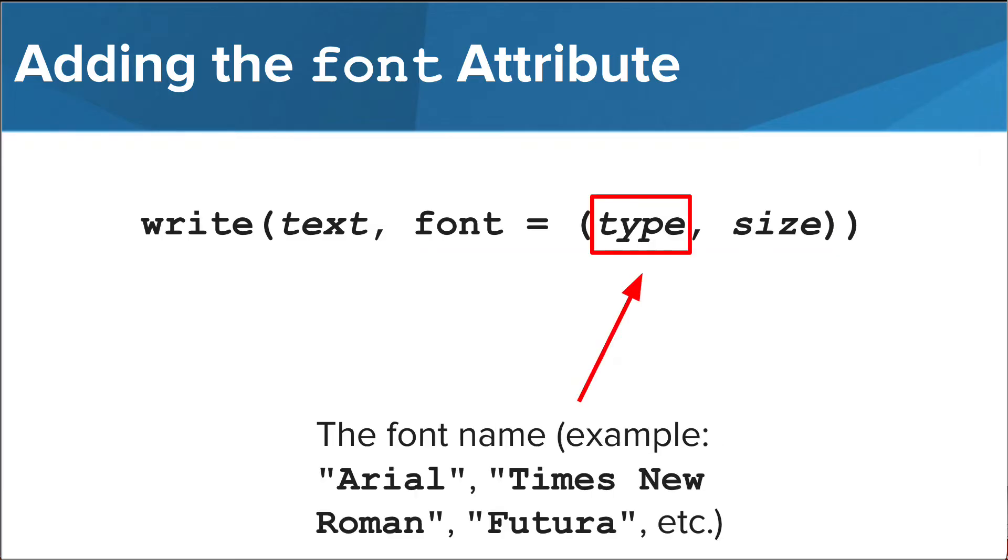The type of font or font name comes first. This is written inside quotation marks. A few examples you can use are Arial, Times New Roman, and Futura.